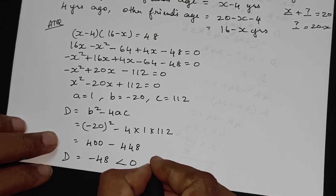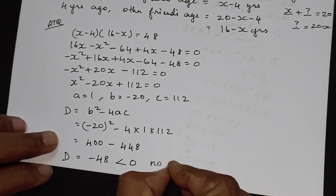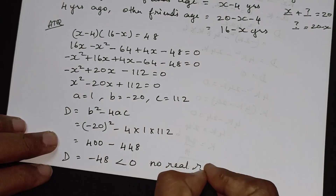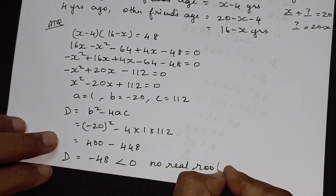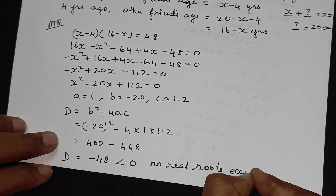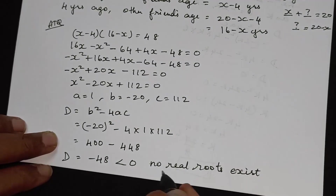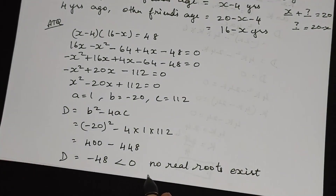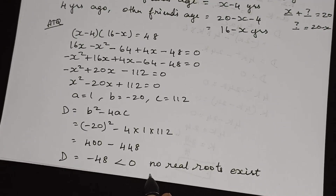Since D is equal to −48, which is less than 0, no real roots exist. So this situation is not possible.